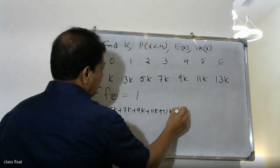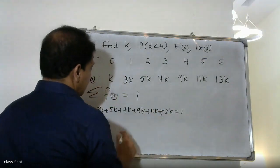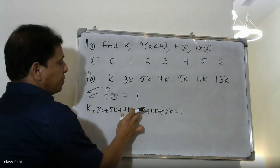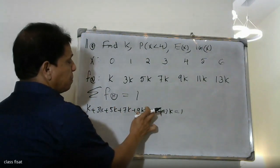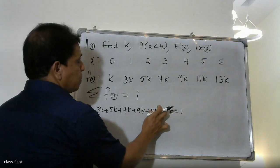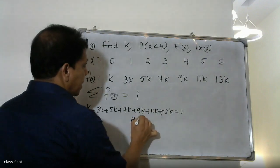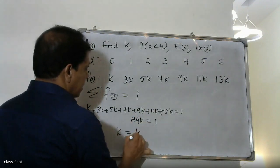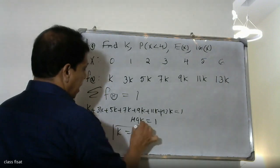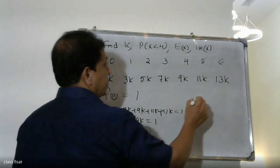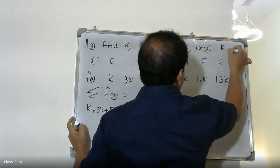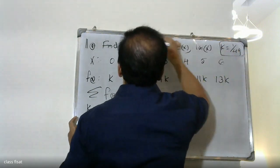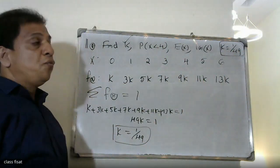k plus 3k plus 5k plus 7k plus 9k plus 11k plus 13k equals 1. That gives 49k equals 1, so k equals 1 by 49.